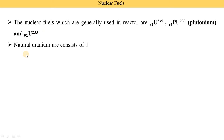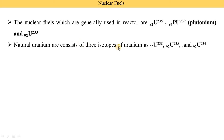Natural uranium consists of three isotopes of uranium: 92 Uranium-238, 92 Uranium-235, and 92 Uranium-234. These are the types of uranium available naturally on the earth.